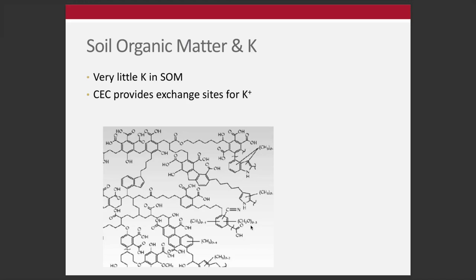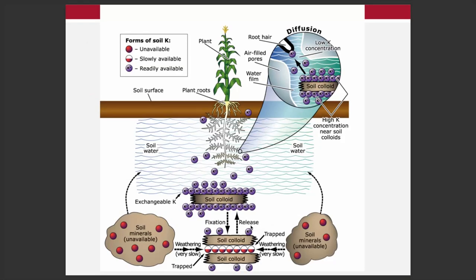Potassium does not get incorporated into biochemical compounds in plants, so it should come as no surprise that there's not very much potassium in soil organic matter, since plant residue — roots and shoots — is the feedstock for SOM. The CEC provides exchange sites for K. Relative to nitrogen or phosphorus, there is much less K in organic matter.